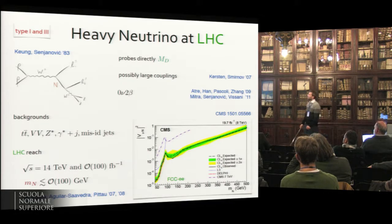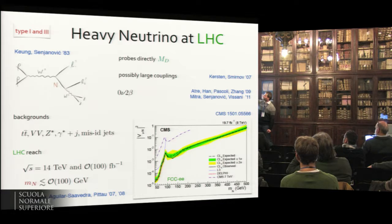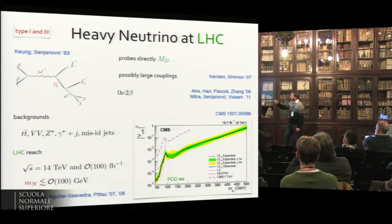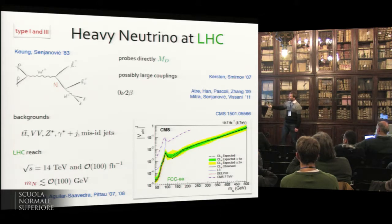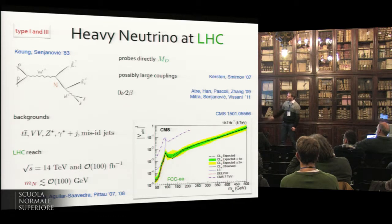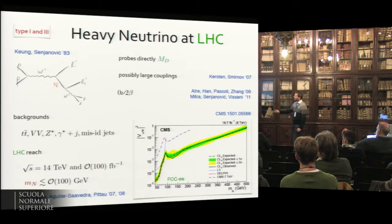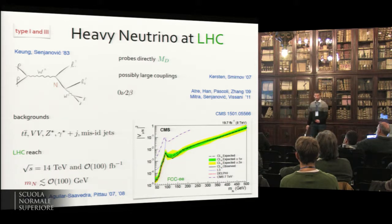One way at the LHC is to produce the heavy Majorana neutrino through its Dirac couplings and observe a decay to same-sign leptons and two jets. This would probe the Dirac coupling directly, with the possibility of large couplings, and it also connects to neutrinoless double beta decay at low energies. Such searches are now done at the LHC, and recent results from CMS are starting to overtake previous limits from DELPHI, which were done on the Z peak. The FCC-ee would go down by a huge factor given enough Z's. The dominant backgrounds in this case are misidentified QCD jets, tt-bar, and pair production of vector bosons — W's and Z's.